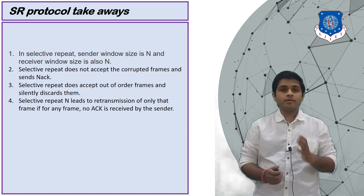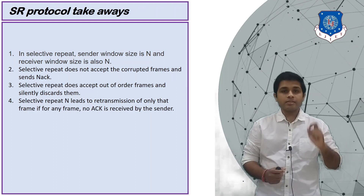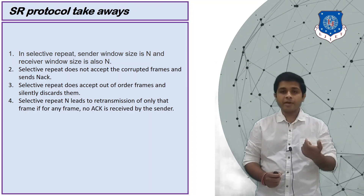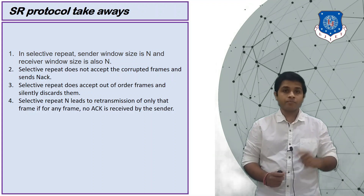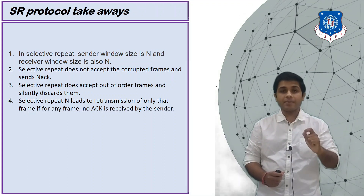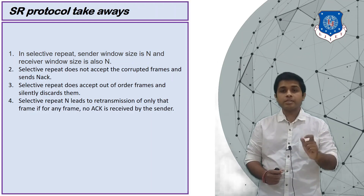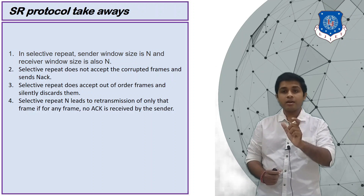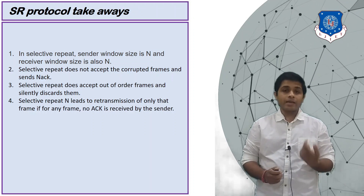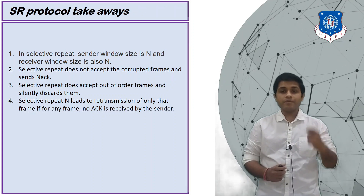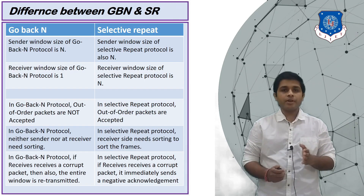Now let's see the takeaways of the Selective Repeat protocol. The sender's window equals the receiver's window. If the receiver receives any corrupted packet, it will send a negative acknowledgement — this is not possible in Go-Back-N, where the receiver silently discards corrupted packets. In Selective Repeat, the receiver will accept out-of-order frames as long as they are within the receiver's window. When any packet is not received or any acknowledgement is lost, only that particular packet is retransmitted instead of the whole frame.